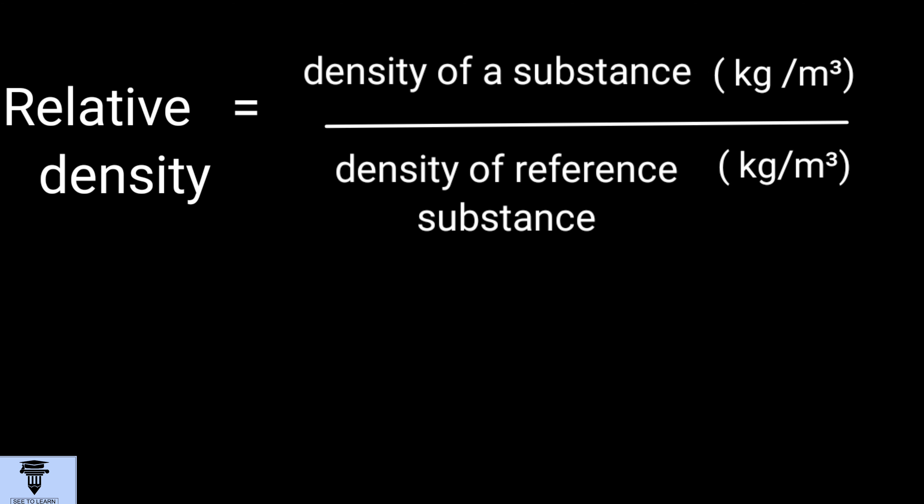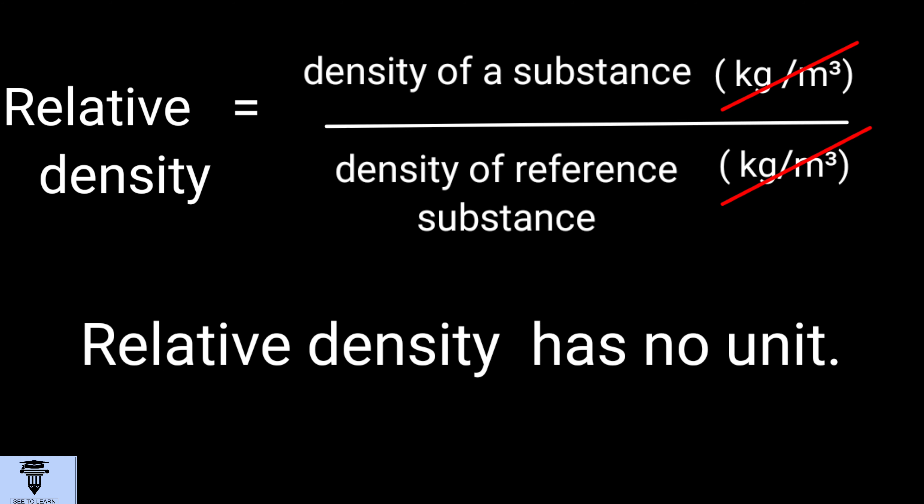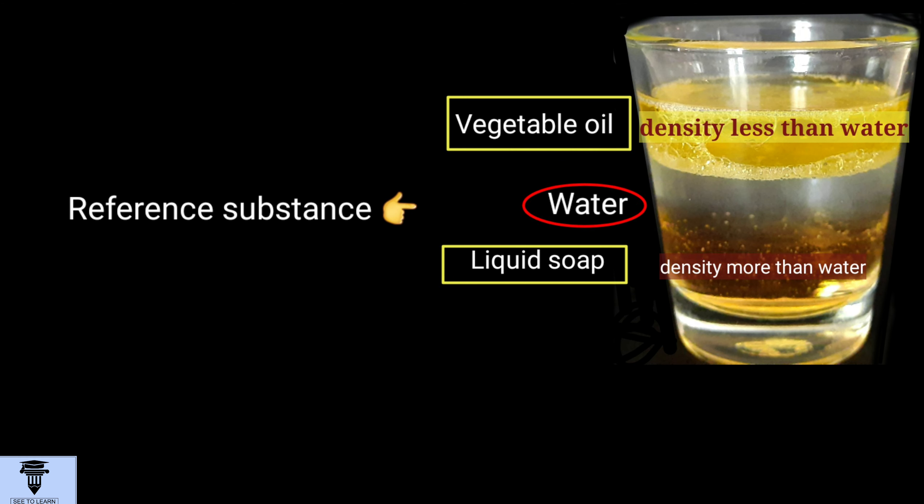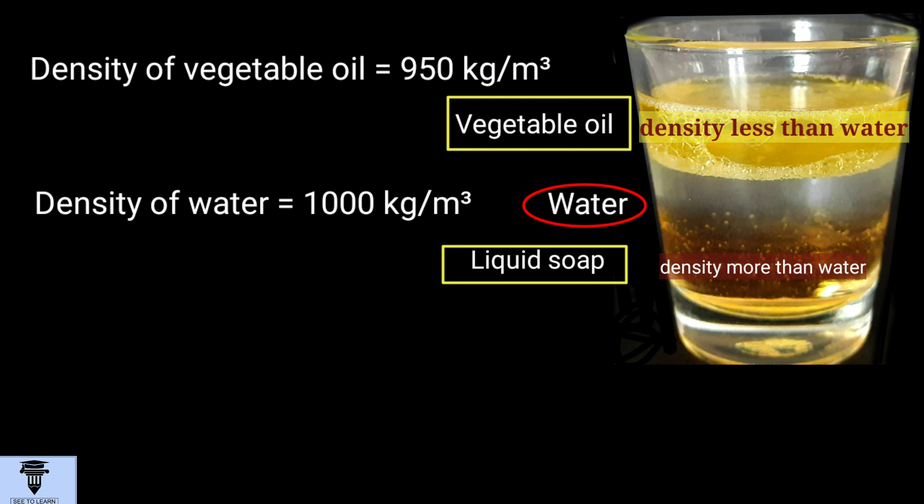And since it's a ratio of two densities, relative density has no unit. Here the reference substance is water. Density of water is around 1000 kg per meter cube; however, it can vary depending upon temperature. Density of vegetable oil is around 950 kg per meter cube.